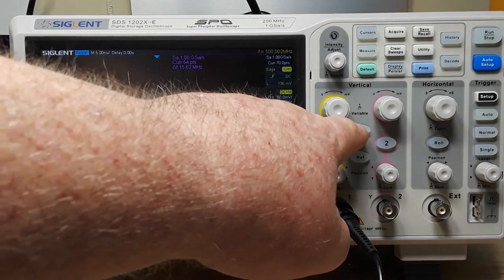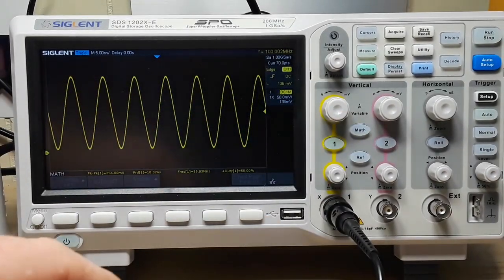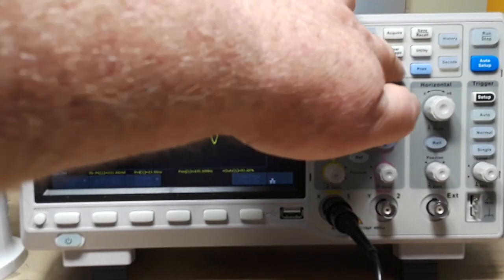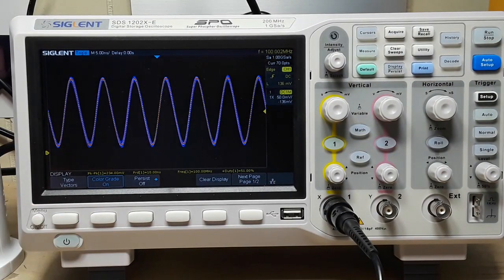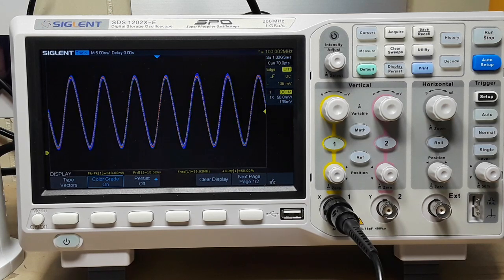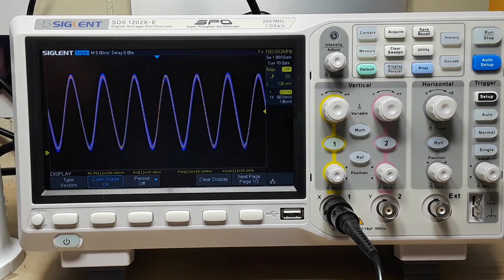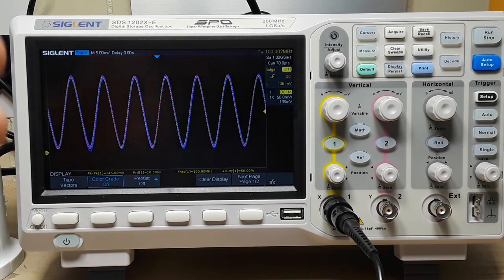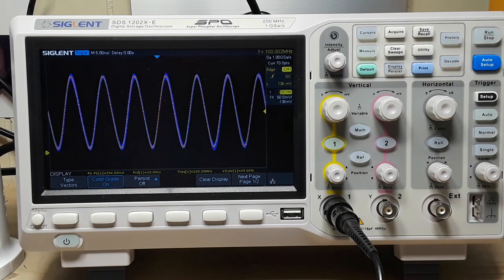Very cool. Another thing is the color grading which you can turn on and off, and think of it like an IR, like a FLIR. The brighter the color, the more intense the part of the signal you're looking at, so it gives you almost a third dimension into the waveform that you're looking at, which I think is pretty cool.